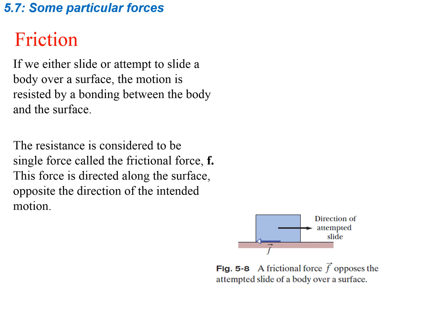Friction — we'll briefly mention it here, but in the next chapter we'll go much more in depth. If we either slide or attempt to slide a body over a surface, the motion is resisted by a bonding force between the body and the surface. At the molecular level, the molecules interact with the surface, providing a sticking or bonding effect that resists motion. This resistance is called the frictional force, represented by little f. This force is directed along the surface opposite the direction of intended motion. The key thing: frictional force always opposes motion.